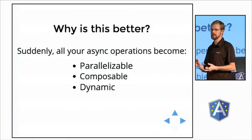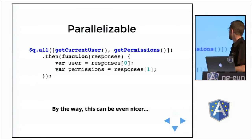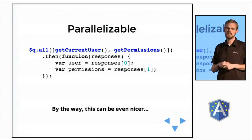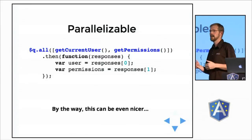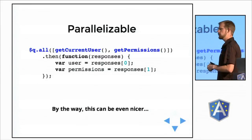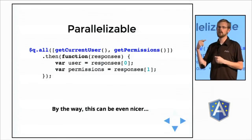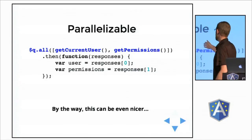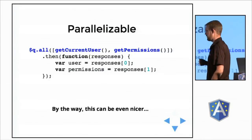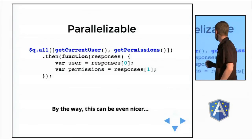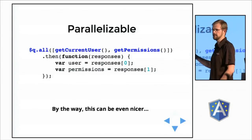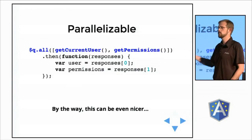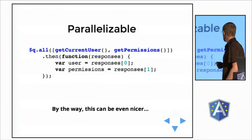It's parallelizable, it's composable, and it's dynamic. Here's why it's parallelizable: the queue service ships with a handy method called all. The all method takes as input an array of promises and returns a new promise whose callback will be called when all of the promises passed to it have been resolved. We pass in an array using getCurrentUser and getPermissions — the same two functions we were just working on, except they return a promise now — and get a responses object that's an array containing the responses from both promises.